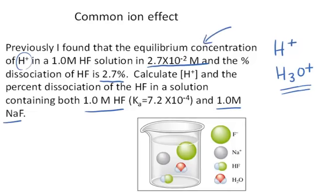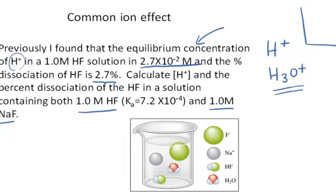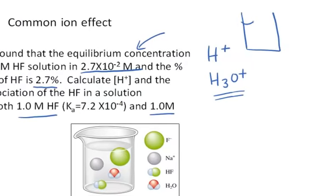In the original solution with just hydrofluoric acid, since it's a weak acid it ionizes to a very limited extent to give some hydronium ion and some fluoride anion, but most of the molecule stays intact as hydrofluoric acid.